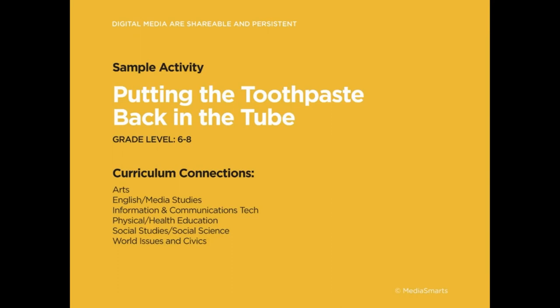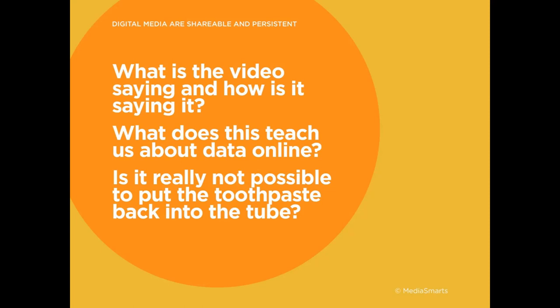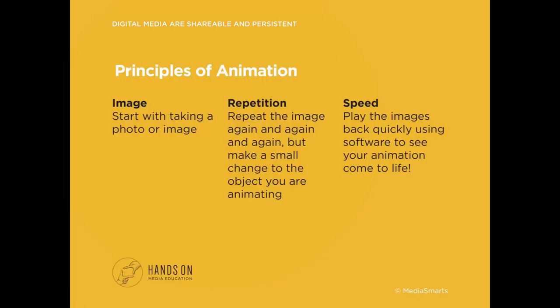One of my favorite activities is 'Putting the Toothpaste Back in the Tube.' It has a creative piece to it but also a lot of really good content. It starts with a mini stop-motion video showing a person finding a tube of toothpaste, jumping on it so it squeezes out, then trying to put the toothpaste back — and finally not being able to. The point is to teach students about online data: how you use it, and how online data can be very difficult to withdraw once it's out there. We discuss the principles of animation to create a quick stop motion in PowerPoint, using duplicates of slides and moving things slowly across to create stop-motion animation. We storyboard it out and do lots of different things.